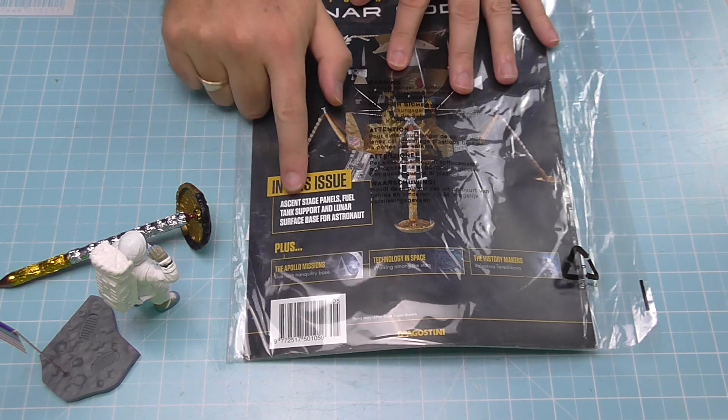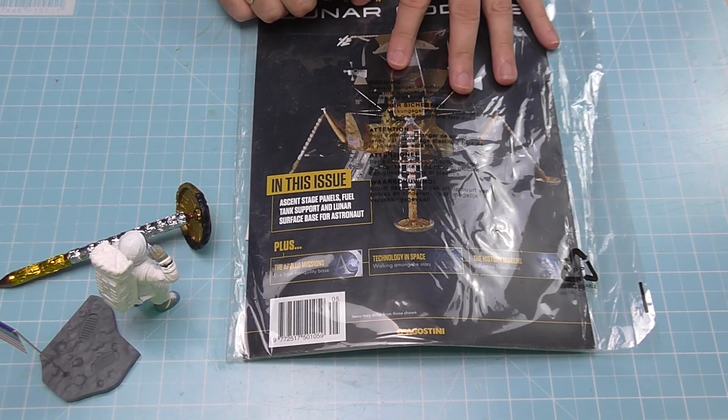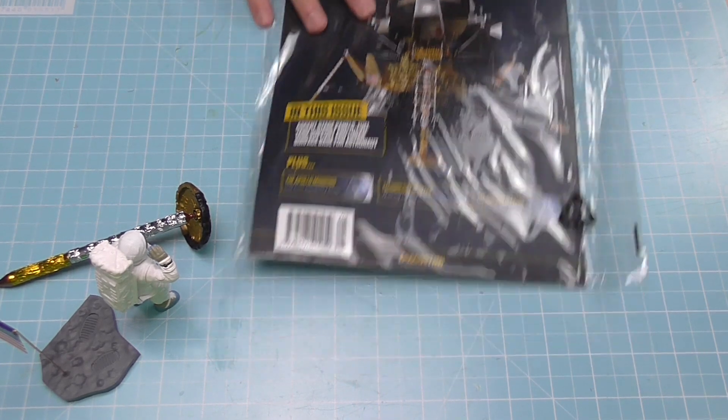Anyway that's all we had to do in that issue and if you look here I have got issue five which is the last one which is going to be some more details. It's the ascent stage panels, fuel tank support, surface space for the astronaut. That's all we've got in that issue and that will probably come out next week and that'll be the last one of that series. So hopefully in the future and when it's 2022 if you're watching this video we've got a working Apollo 11 lunar module. But who knows it may never see the light of day. That's what it is with these trials but at least we know it's a trial before it comes out and it just doesn't get cancelled halfway through like some other builds that I can mention, DB5.